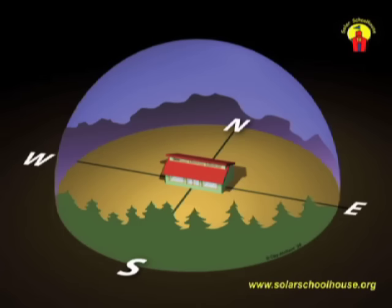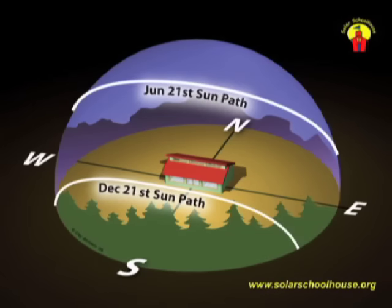On the surface of the Earth, we'll place letters for the four compass directions: north, south, east, and west. Remember, the sun's path is highest in the sky on the summer solstice, the longest day of the year. Its path is lowest on the shortest day of the year, the winter solstice. If we draw the sun's paths on these two days, we can clearly see why the day lengths are different. The sun's path across the sky is longer in the summer and shorter in the winter. The longer the path, the more hours the sun is in the sky.